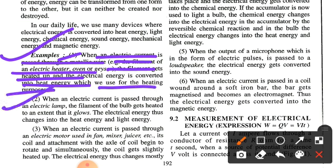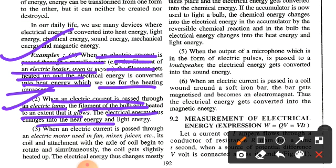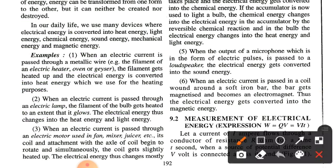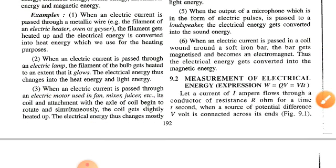The second example: when an electric current is passed through an electric lamp, the filament of the bulb gets heated to such an extent that it glows. The electric energy is converted into heat energy and light energy.